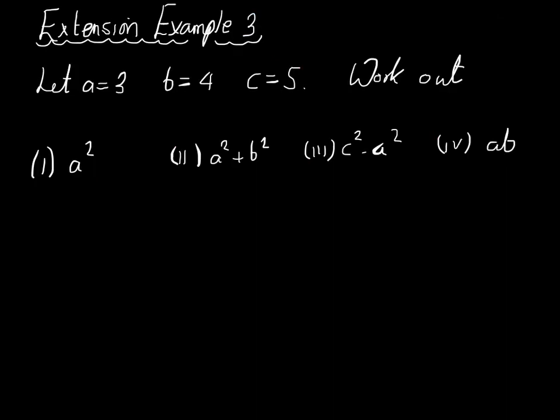Here's the extension example. If a is equal to 3, b is equal to 4, and c is equal to 5, we're asked to work out the following. Now remember that, for example, if we had 3 squared, that means 3 multiplied by itself. So in these examples, when we see a squared, that means a times a. We're going to substitute in here. a squared means a times a, and a is 3. So this means 3 squared, which means 3 times 3, which is 9.